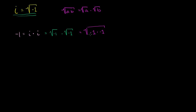If I have the principal root of the product of two things, that's the same thing as the product of each of their principal roots — I'm doing this in the other order here. And then from that, we all know that negative 1 times negative 1 is 1, so this should be equal to the principal square root of 1. And the principal square root of 1 — this radical means principal square root, positive square root — is just going to be positive 1. And they'll say this is wrong. Clearly, negative 1 and positive 1 are not the same thing.